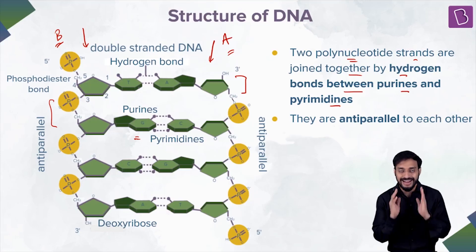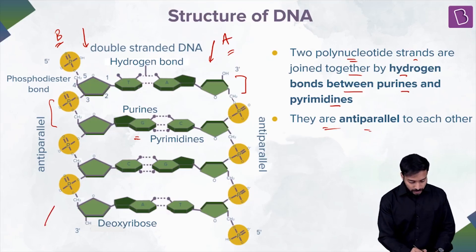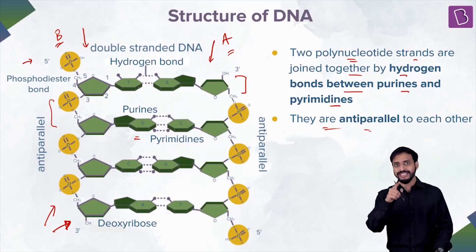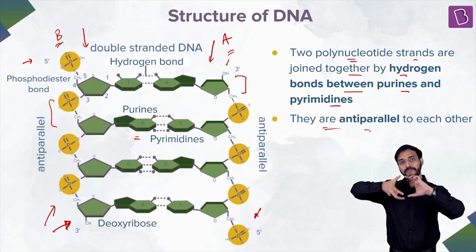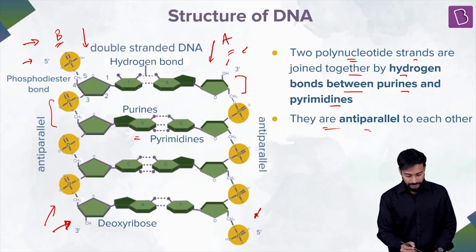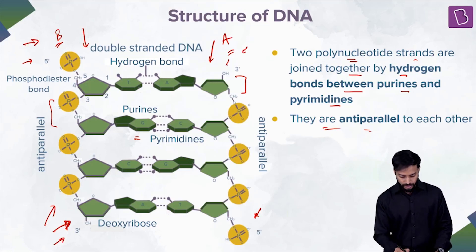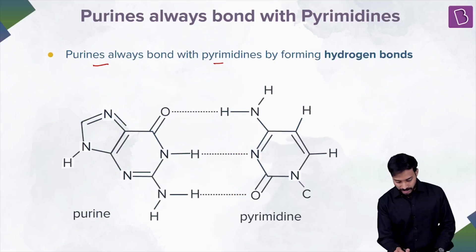The hydrogen bonding between purines and pyrimidines gives DNA its double-stranded structure, and it's anti-parallel. The direction of each strand differs: strand A has its 5' end free at one end and 3' end free at the other. The other strand runs in the opposite direction — where one strand has 5', the other has 3'. That's the anti-parallel nature of DNA.